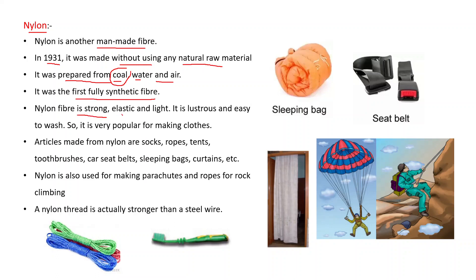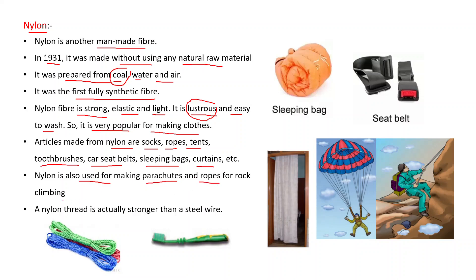Nylon fiber is strong, elastic, and light. It is lustrous — meaning it has a shiny appearance — and easy to wash, so it is very popular for making clothes. Articles made from nylon include socks, ropes, tents, toothbrushes, car seat belts, sleeping bags, curtains, etc. Nylon is also used for making parachutes and ropes for rock climbing.